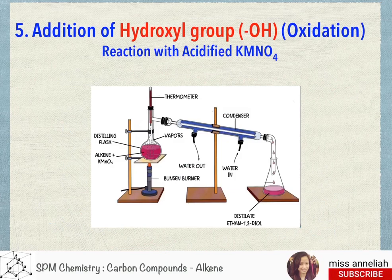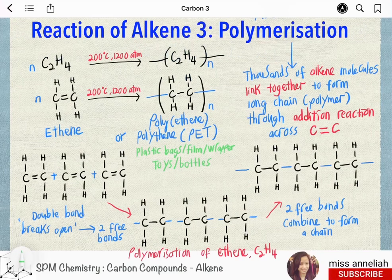This is the apparatus setup for the oxidation of alkene to diol, whereby the alkene is heated with the acidified potassium manganate solution and the distillate is the ethane-1,2-diol.